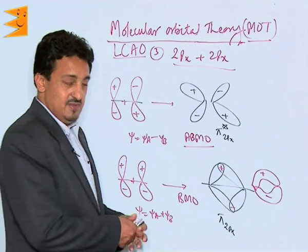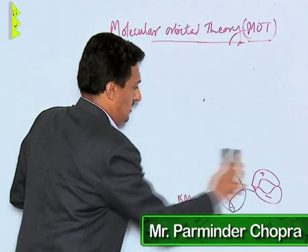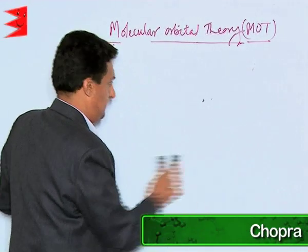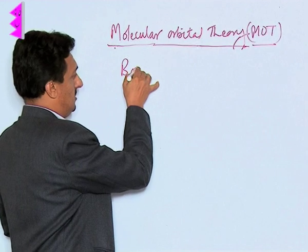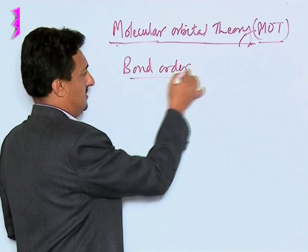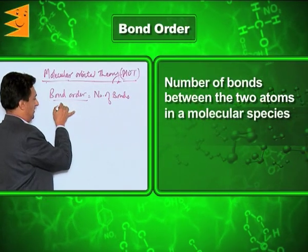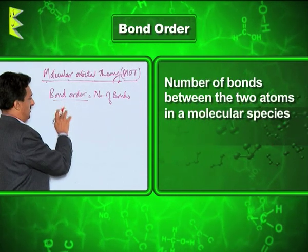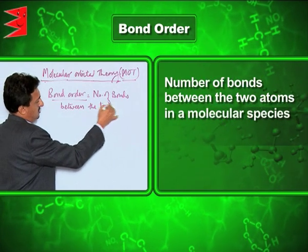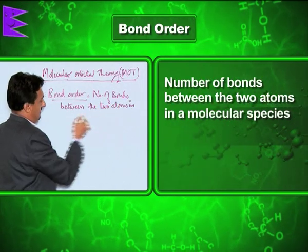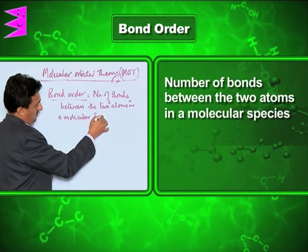In order to explain all this, a term called bond order was given. Bond order is the number of bonds between the two atoms in a molecular species.